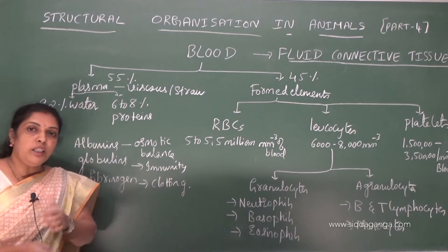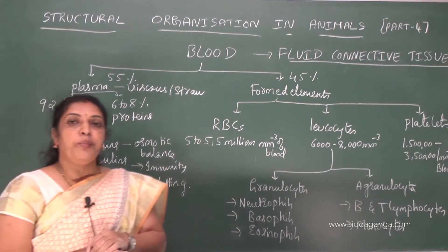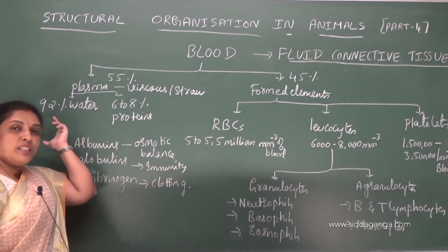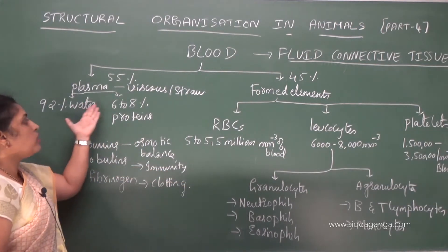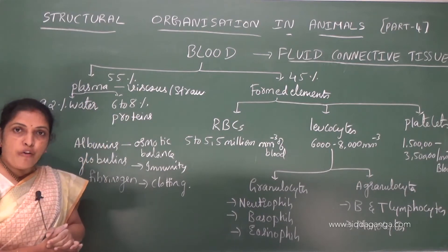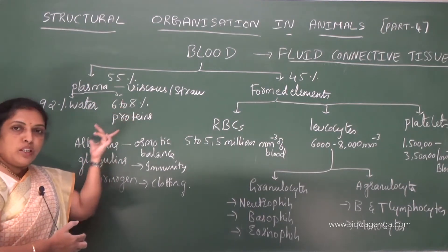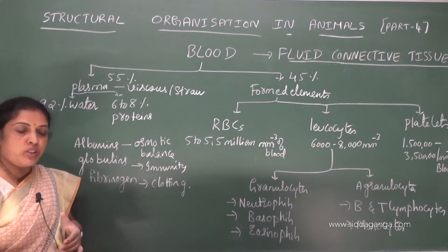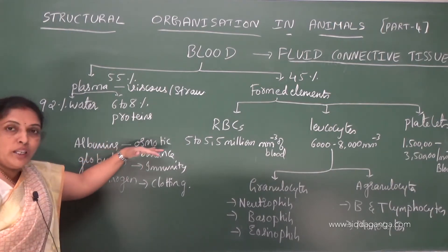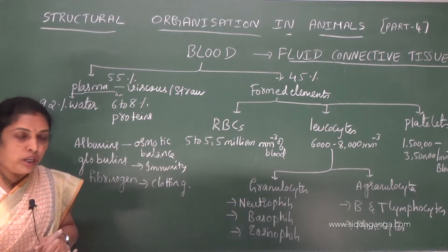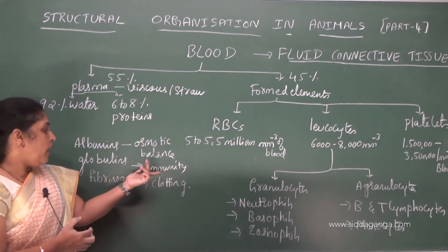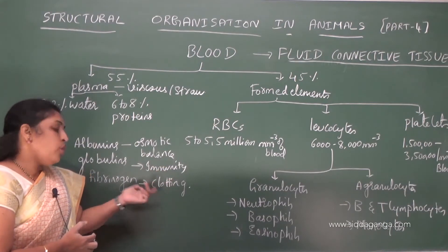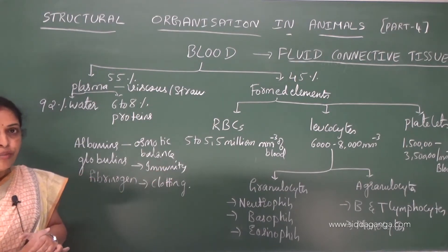Plasma makes up nearly 55 percent of blood — that is the fluid part. Of that, 92 percent is water and 6 to 8 percent is proteins. Those proteins are of three types: albumins, globulins, and fibrinogen. Albumins mainly help to maintain osmotic balance in blood. Globulins provide immunity. Fibrinogen helps in clotting of blood.